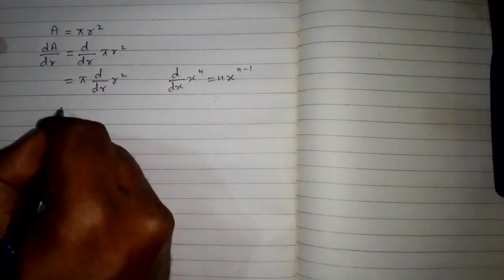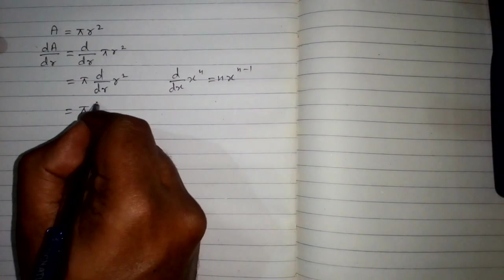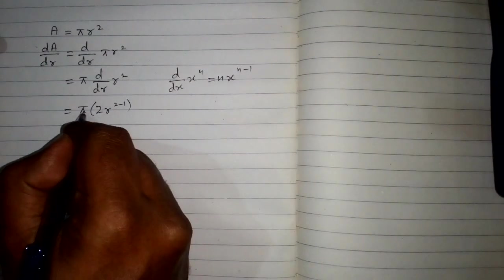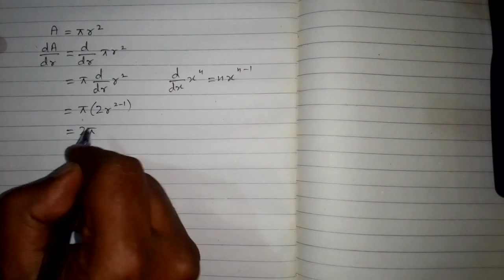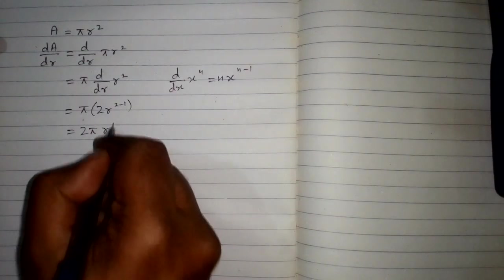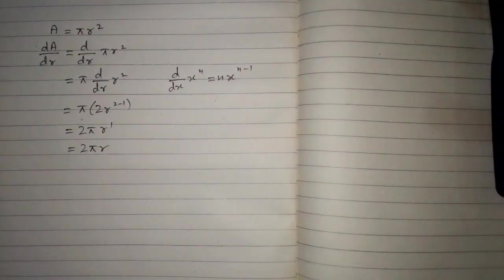So the derivative of r square is 2 times r to the power 2 minus 1. Now pi multiplied by 2 is 2 pi, and r to the power 2 minus 1 is r to the power 1, or simply we can write 2 pi r. So the derivative of the area of a circle with respect to r is 2 pi r.